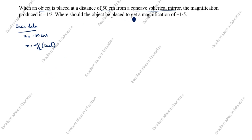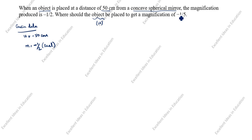Where should the object be placed to get a magnification of minus 1 by 5? So, what we need to find is u for a magnification of minus 1 by 5. Let's see how we will find the solution.